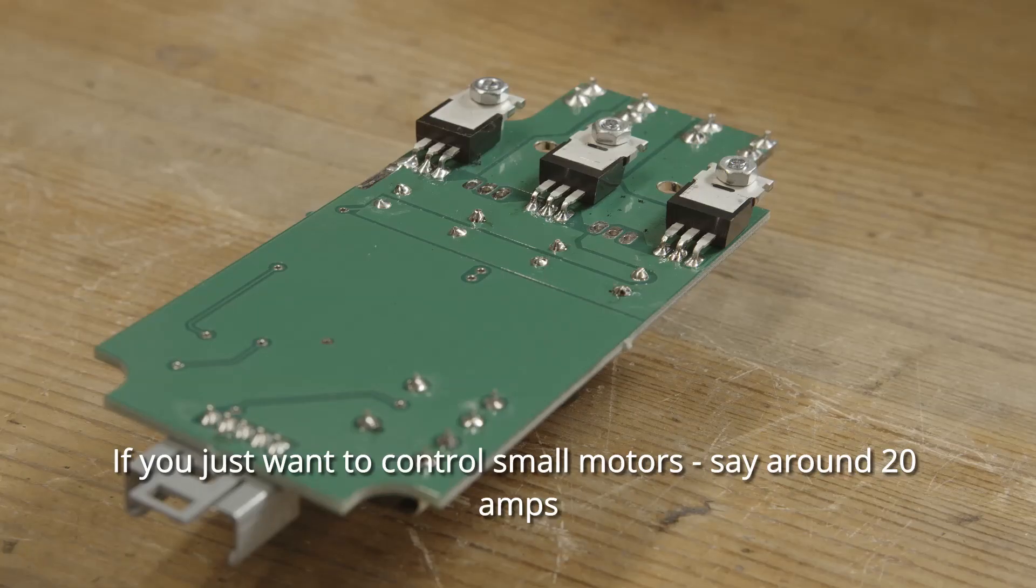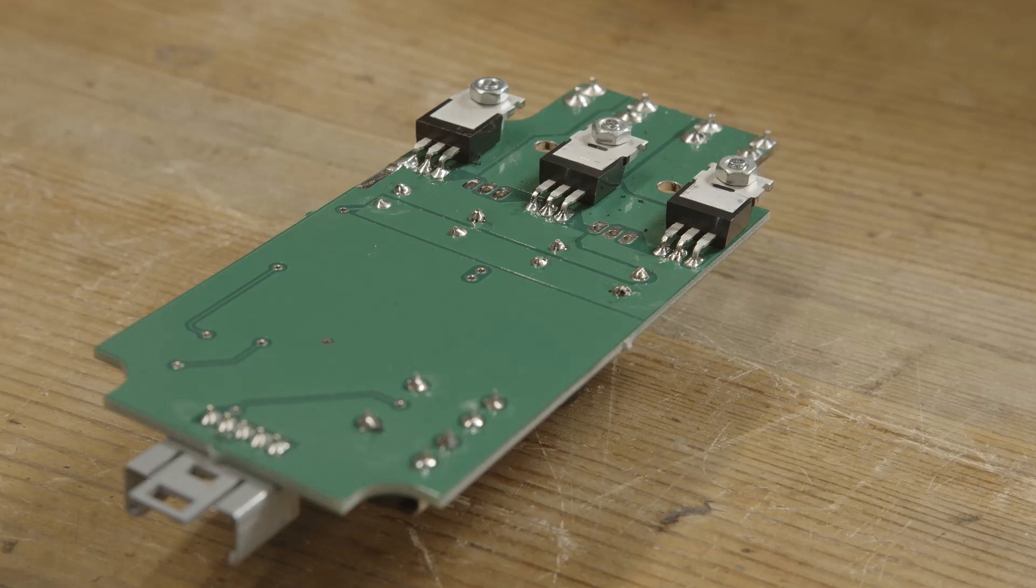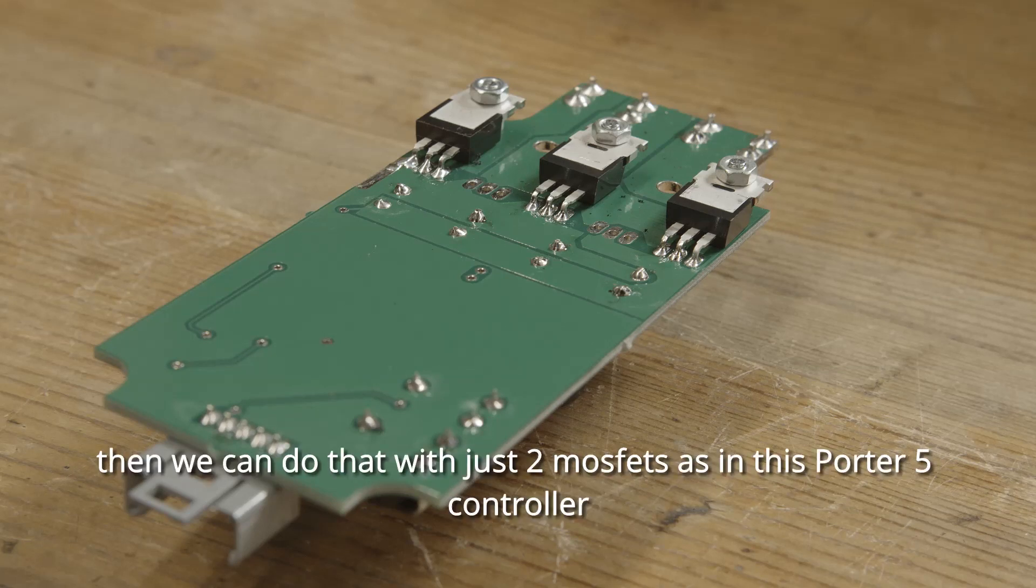If you just want to control small motors, say around 20 amps, then we can do that with just two MOSFETs as in this Porta 5 controller.